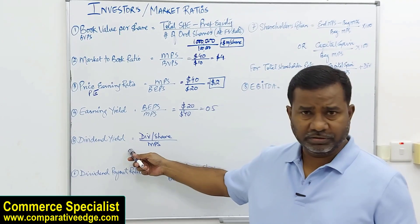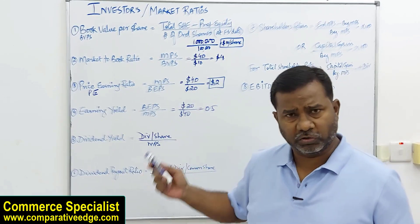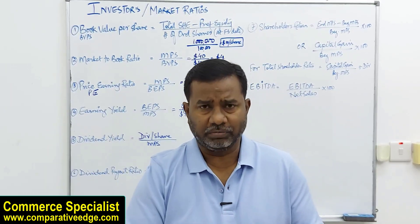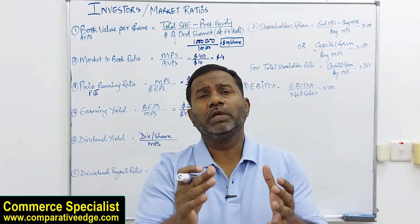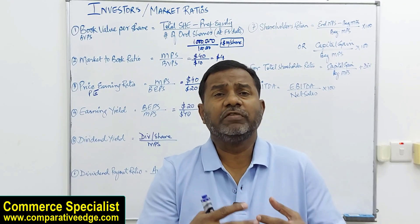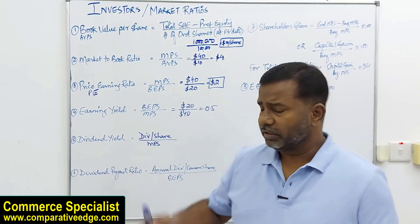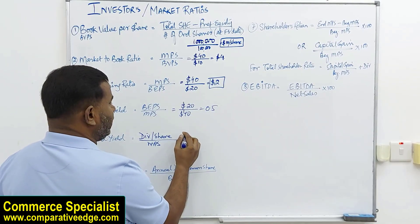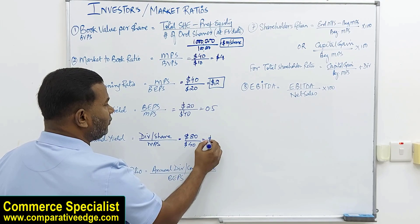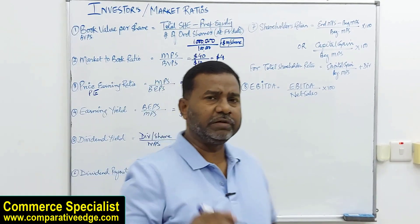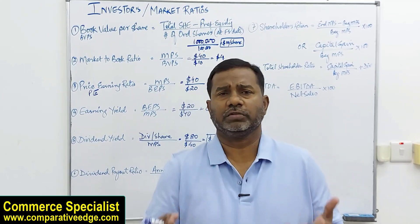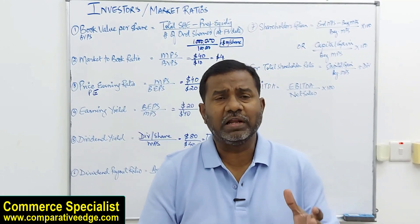The next important ratio is dividend yield. The formula is dividend per share divided by market price per share. You can also calculate it in totality as total annual dividend divided by total market capitalization. If dividend per share is $80 and market price per share is $40, dividend yield is $2. This can also be expressed as a percentage.